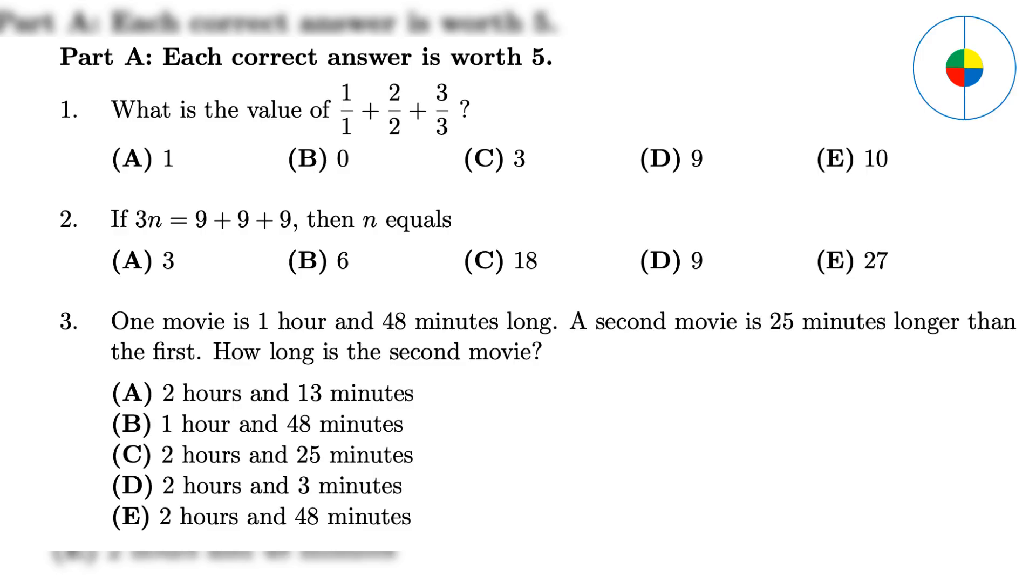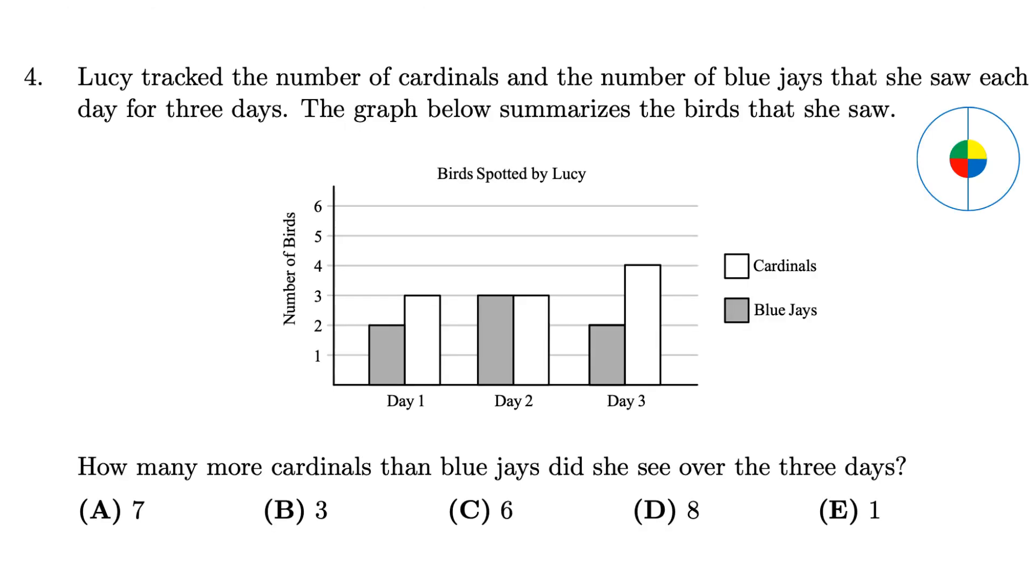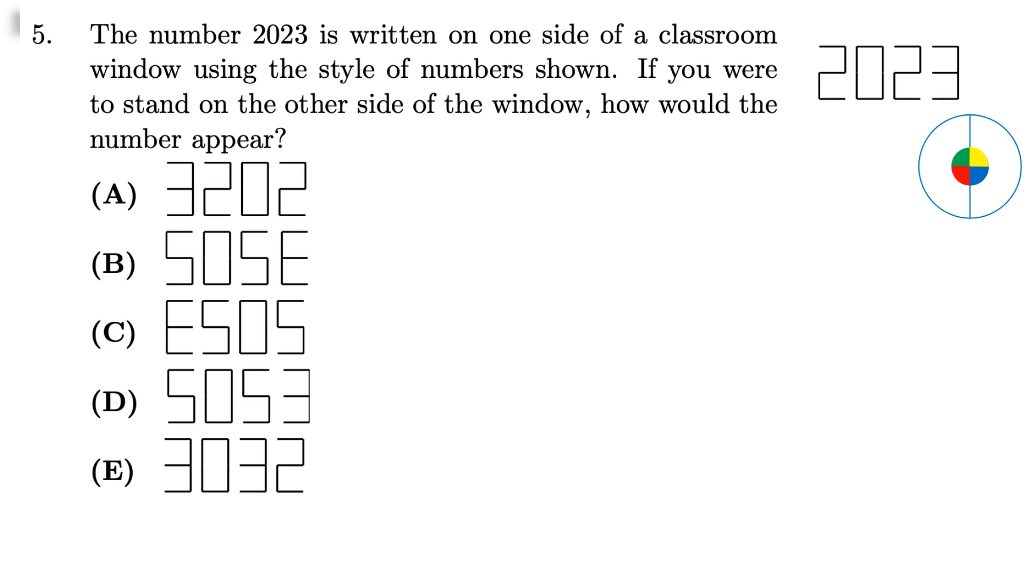Part A. Easy Questions. Question 1: This is a simple calculation, the answer is 3. Question 2: This is a simple algebra, the answer is 9. Question 3: This is a simple question about time, the answer is A. Question 4: This is a simple graph question, the answer is 3. Question 5: Use some imagination, the answer is C.